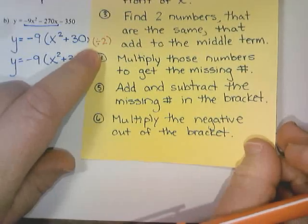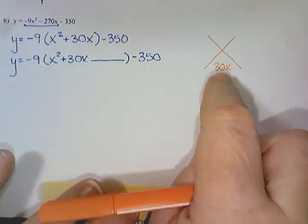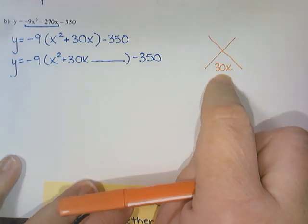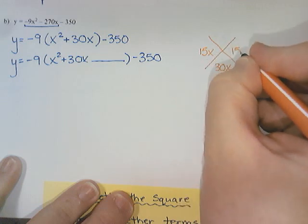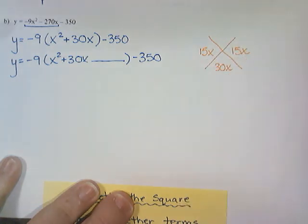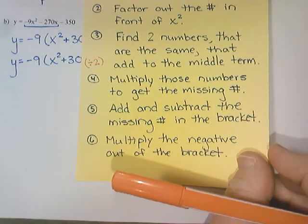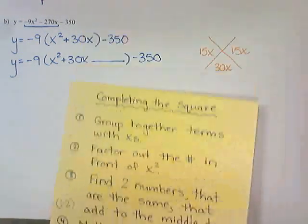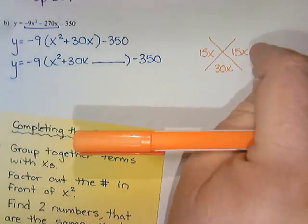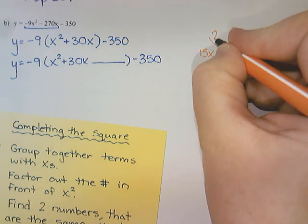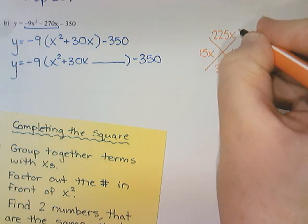I made a little note to myself that says divide by 2. If I divide 30 by 2, that's 15. 15x plus 15x equals 30x. Then it says multiply those numbers to get the missing number. So I'm going to multiply these together: 15 times 15 is 225x squared.